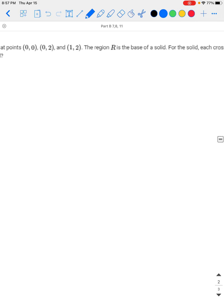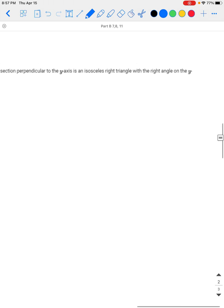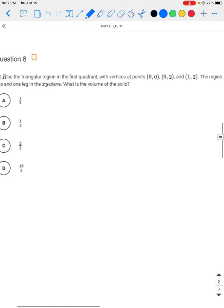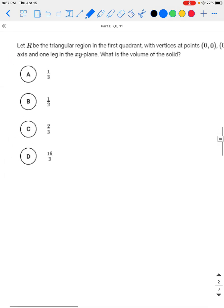The region R is the base of a solid. For the solid, each cross-section perpendicular to the y-axis is an isosceles right triangle with the right angle on the y-axis and one leg in the xy-plane. What is the volume of the solid?